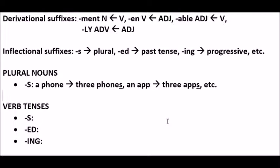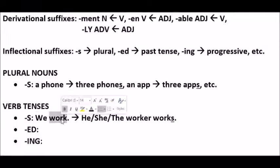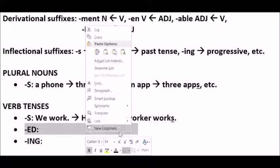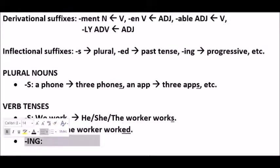As for verbs, they can take inflectional suffixes which express verb tense and also agreement in the present or past tenses. When a verb has a plural subject, such as 'we,' the verb does not take an -s, but when the subject is singular — he, she, or the worker — we need that -s on the verb. It's present tense, singular subject. We can also add -ed to verbs and it becomes a past tense verb. Again, the verb doesn't change its part of speech — it stays a verb, but it is marked as a past tense verb.